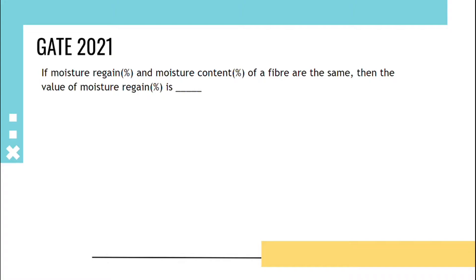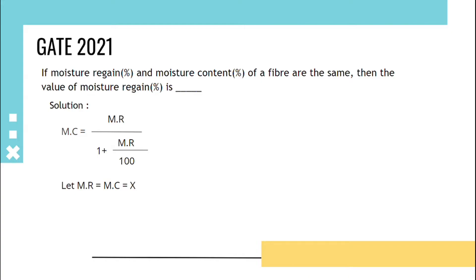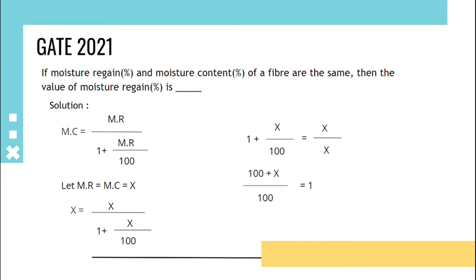The solution is: we know that moisture content equals moisture regain upon (1 plus moisture regain) divided by 100. Given that moisture regain equals moisture content, let it be x. Substituting x in the above formula, we get: (1 + x/100) equals x/x, that is (100 + x)/100 equals 1.